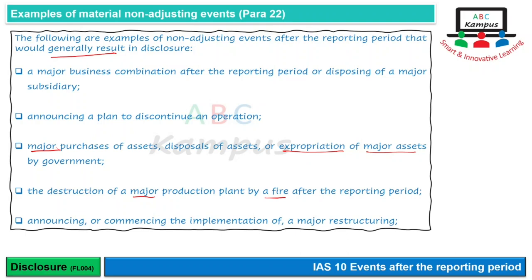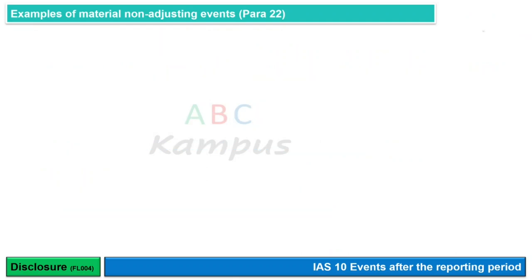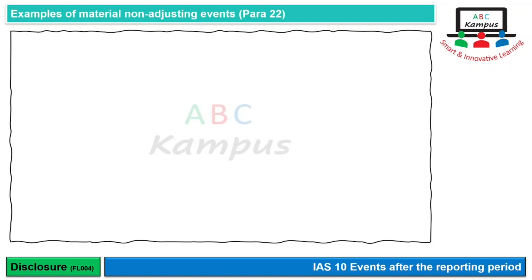Announcing or commencing the implementation of major restructuring۔ Restructuring کا مطلب ہے جب آپ manner of business اور scope of business کو change کرتے ہیں — جیسے centralized سے decentralized کی طرف جانا، یا matrix organization سے functional organization کی طرف جانا۔ اگر ایسی announcement year end کے بعد کرتے ہیں تو وہ non-adjusting event ہے، لیکن business پر اس کا impact ہوتا ہے۔